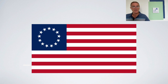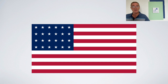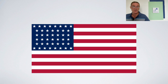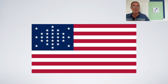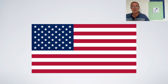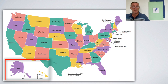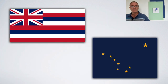Over time, as more states joined the union, the flag changed many times. There wasn't a law that required the stars to be in any particular arrangement, so there was a surprising variety of patterns — from stars to various kinds of circles and even a diamond arrangement. Eventually, the idea of a set of rows became the standard. The last states to join the union were Alaska, when the flag briefly had 49 stars, and Hawaii, which became the 50th state. Both became states in 1959. We studied the flag of Hawaii in a previous lesson, and we'll cover Alaska soon as well.